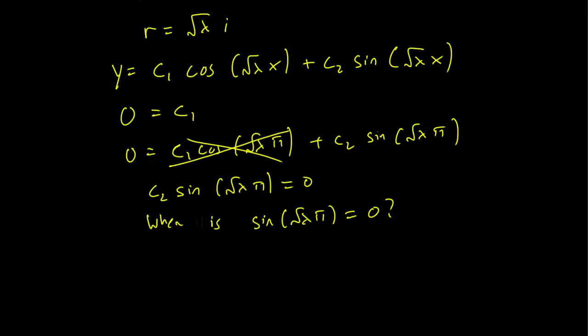So this is true when root of lambda is equal to 1, 2, 3, 4, 5, 6, whatever. For all these values, sine root of lambda pi is equal to zero. And this is true when lambda is 1, 4, 9, 16, 25, 36, and so on.